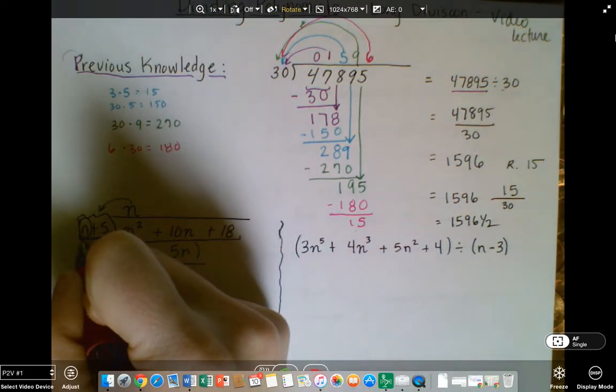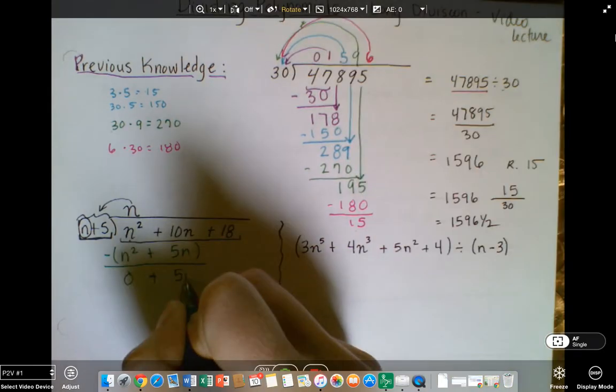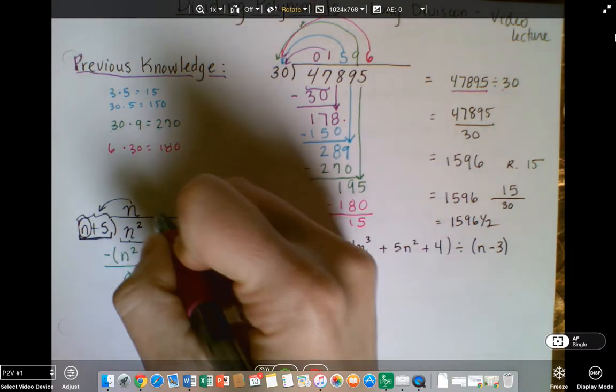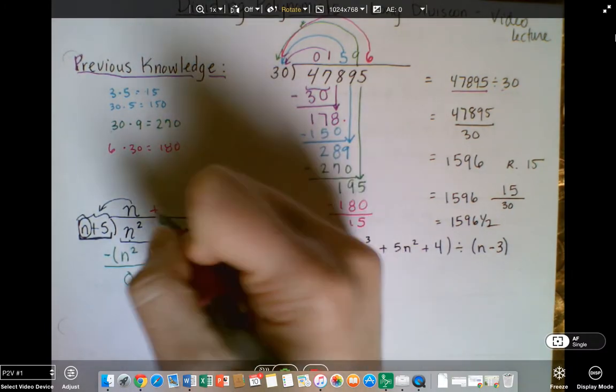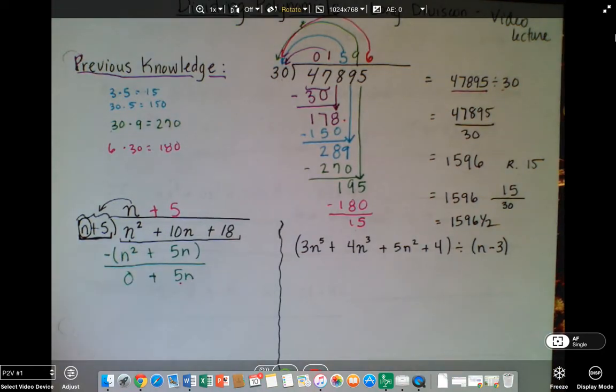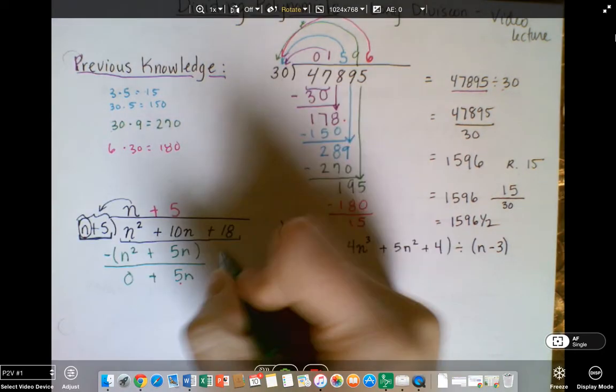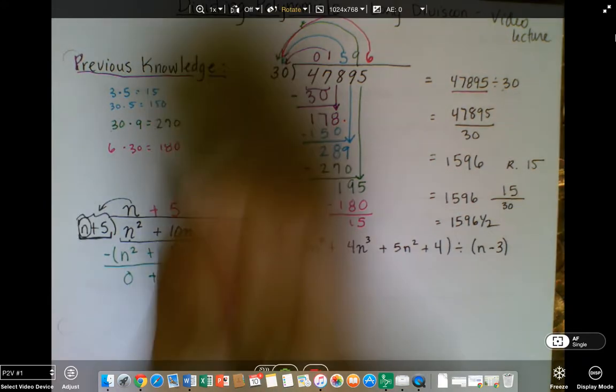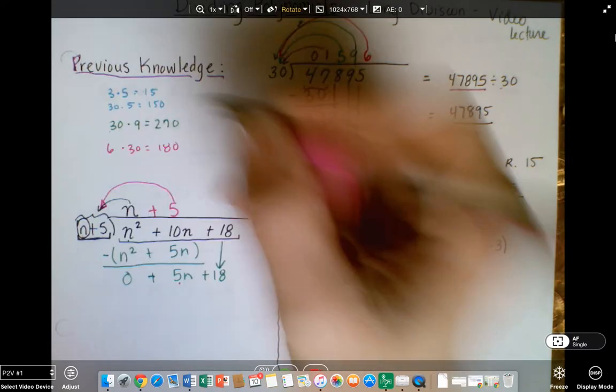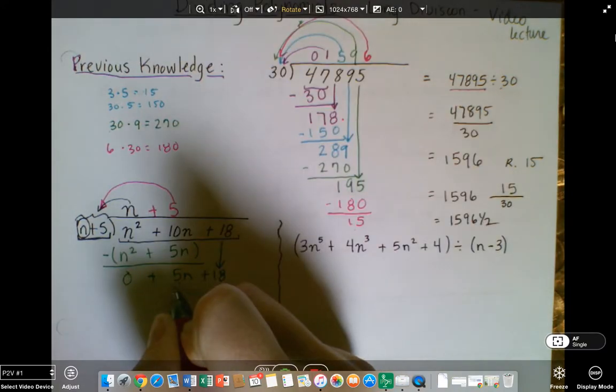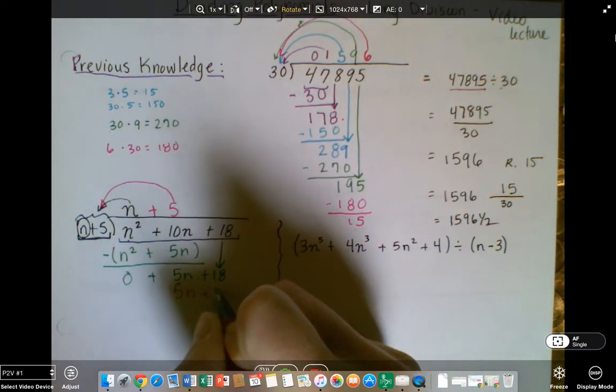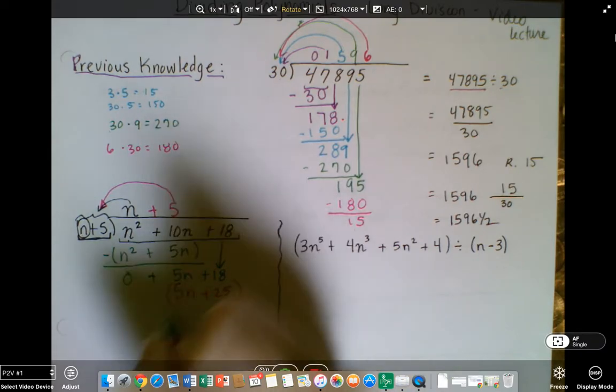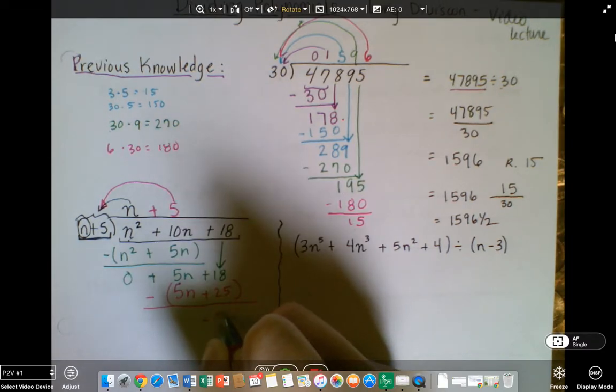We're going to do the same thing we did before. How many times does 30 go into this? Here we're asking how many times does n go into 5n? Well, it goes in 5 times. Still drop. Plus 18. And then 5 times the quantity here is going to give us 5n plus 25. And then we're going to subtract. It's going to give us 0n minus 7.